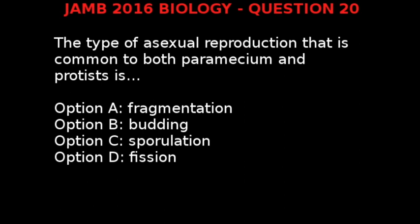Protists reproduce both sexually and asexually. They reproduce sexually by conjugation and asexually by binary fission, multiple fission, budding, and sporulation. Option A is wrong because protists do not reproduce by fragmentation. So we are left with budding, sporulation, and fission, which are all ways by which protists reproduce.